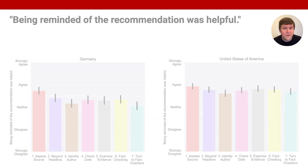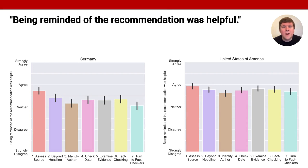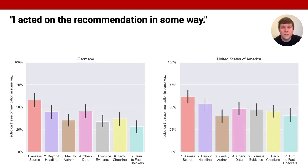In addition to that, we investigated whether participants perceived it as helpful that they were reminded of the different components of the interactive checklist. We find that reminding users about the assessing the source component is perceived as most helpful. In Germany, the reminder to turn to fact checkers is perceived as the least helpful component. In the United States, it is second to last. We also examined which of the components users reported acting on. The assessing the source component is the one that most people acted on. In Germany, turning to fact checkers is the least frequently acted on component. In the US, it is second to last, before identifying the author.